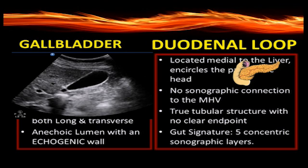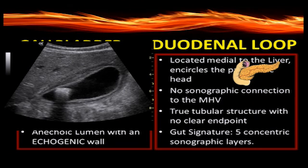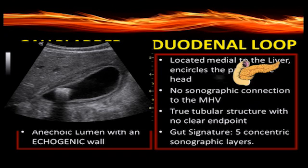When looking at these two sonographically, a normal gallbladder will be truly anechoic with a thin echogenic wall surrounding it, and we will be able to clearly demonstrate a true endpoint. When we have an abnormal gallbladder, although we are able to visualize the distinct layers and often some subserosal edema, this will not look like the true gut signature, which is going to be five concentric sonographic layers.